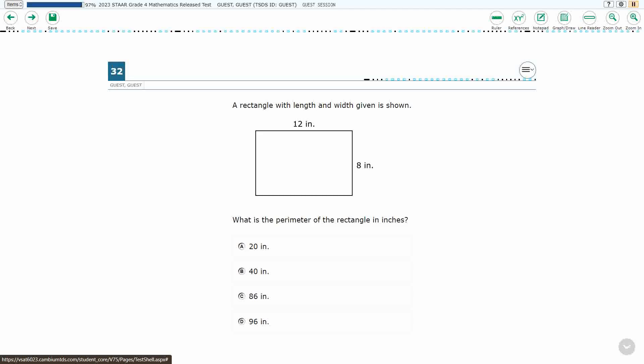Alright, so we have a rectangle here. We've got 12 inches and 8 inches, so we need the perimeter. Seems pretty straightforward. So how do we solve our perimeter?